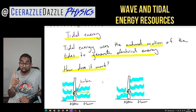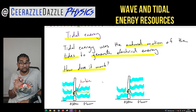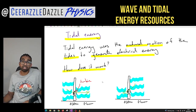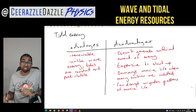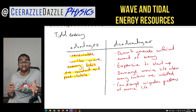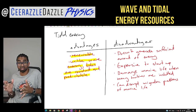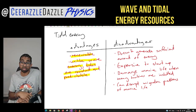Make sure you understand the difference between wave energy and tidal energy — they are not the same. Advantages of tidal energy: first, it is renewable. Second, unlike wave energy, tides are constant and predictable — you know it's going to happen every day and you know when the peak times are going to be.